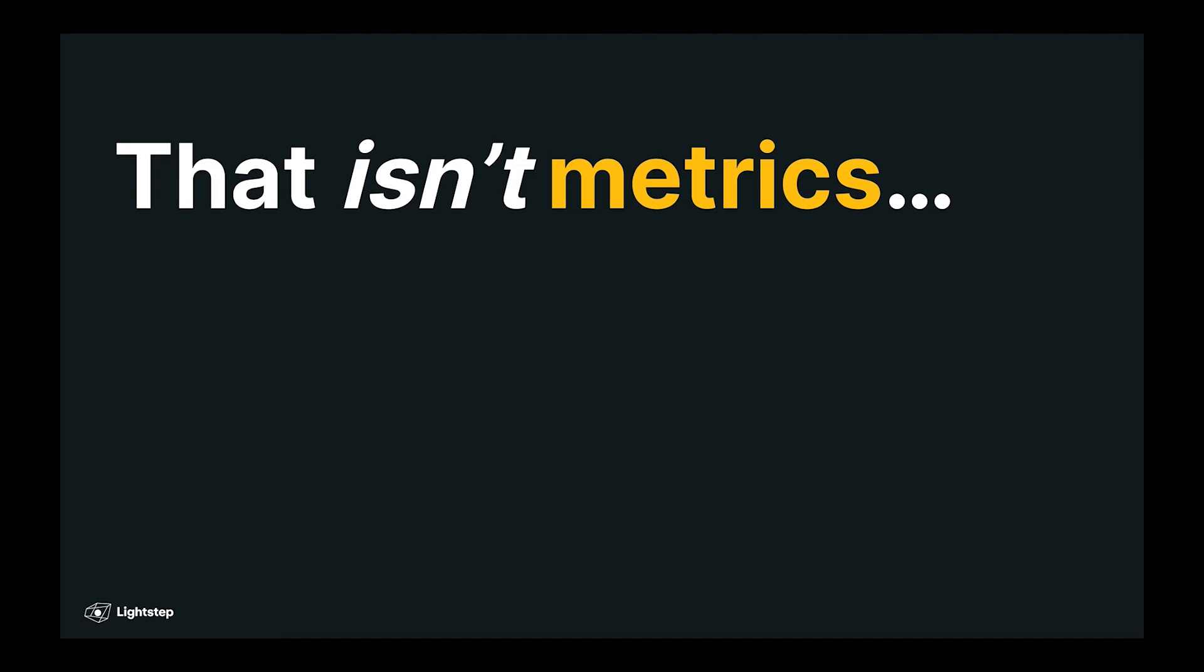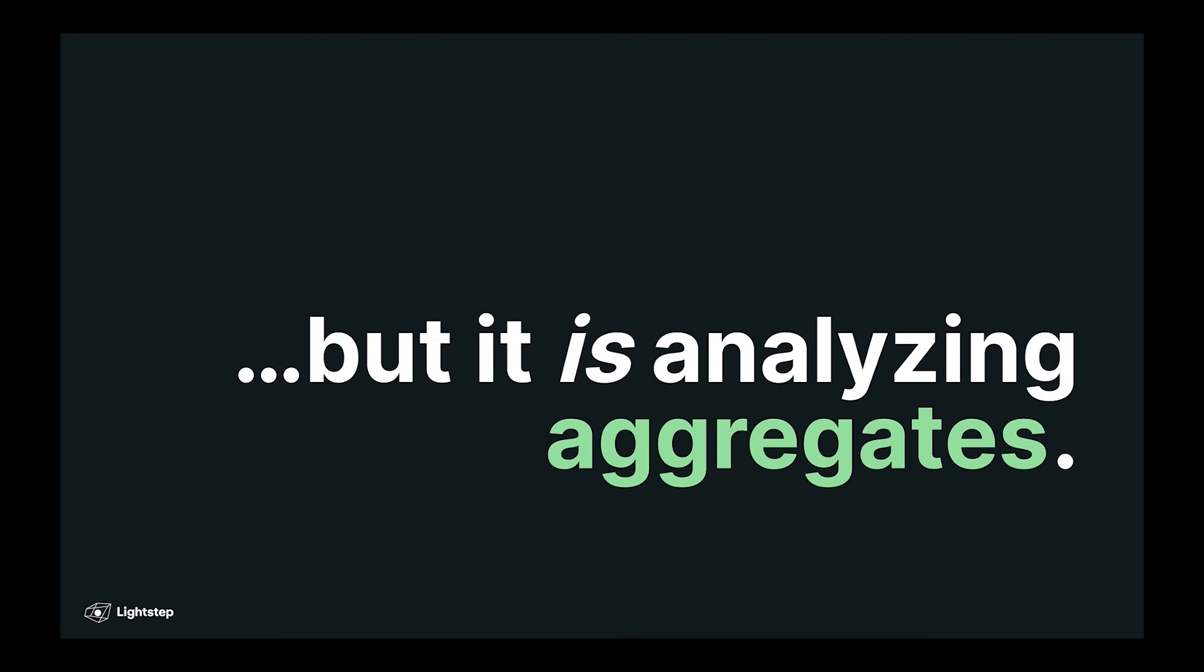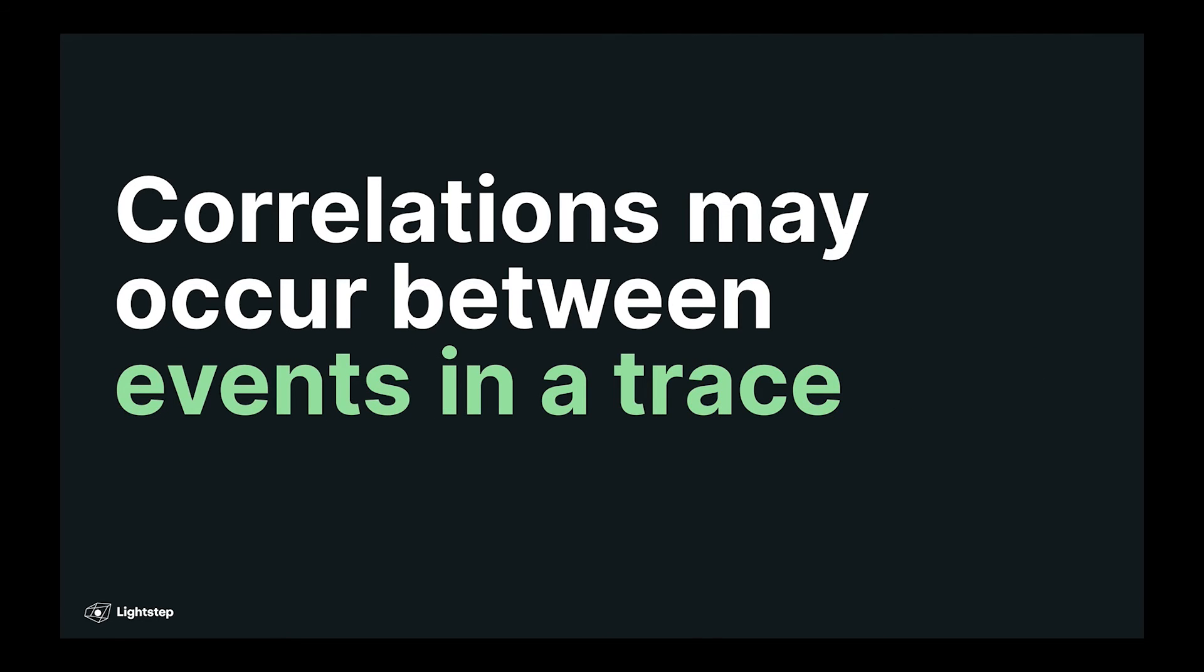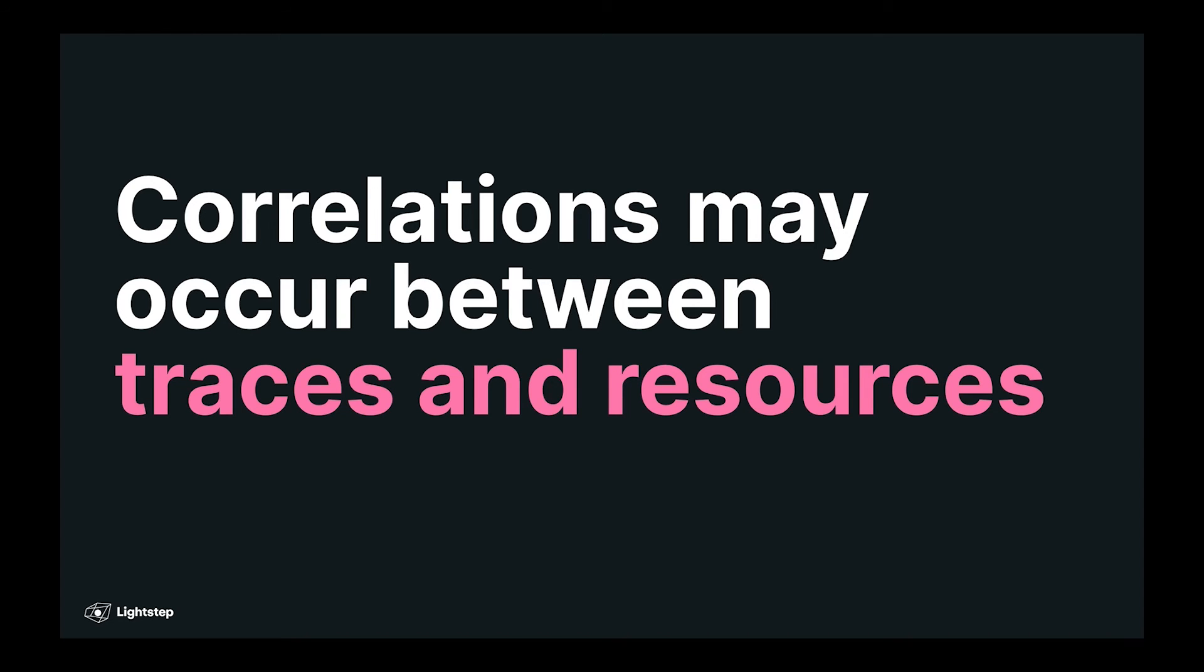Looking at these kinds of correlations isn't exactly what we would call metrics. But it is analyzing events in aggregate. It's not just a single standalone metric. Because these correlations might occur in multiple ways. They might occur between attributes in a single event. They might occur between multiple events in a trace. They might occur between traces and the resources those traces are passing through.